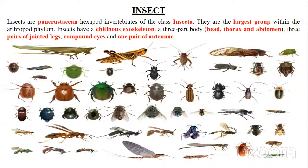This is a very large group. More than 1 million species of insects are identified so far, and more than 4 million insect species are not yet discovered.